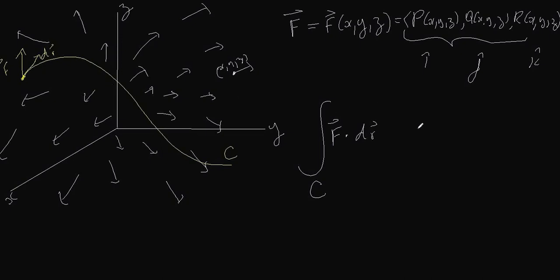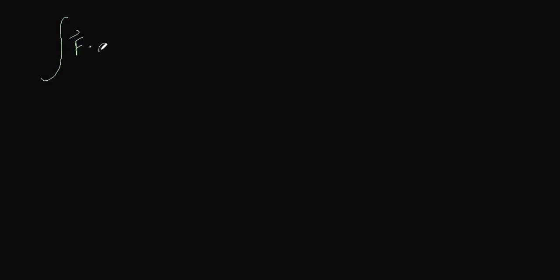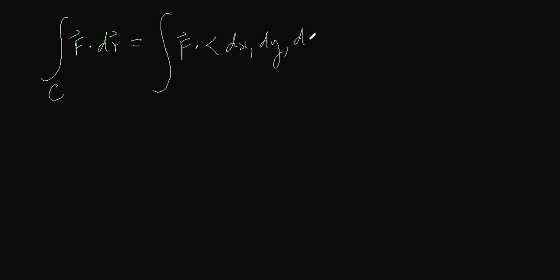dr is an infinitesimal vector along the curve C. So dr is a vector which has components dx, dy, and dz. The meaning of this integral — F dot dr over the path C — is exactly the same as F dot (dx, dy, dz) over the path C.